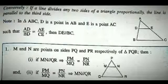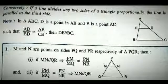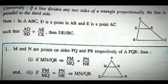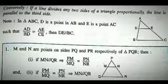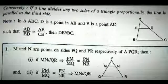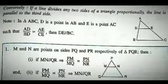Next is the Converse of the theorem. The converse states that if DE is a line drawn through any two sides of a triangle and AD by BD equals AE by CE, then DE is parallel to BC. Similarly, if MN and R are points on PQ and PR of triangle PQR, and MN is parallel to QR, then PM by MQ equals PN by NR.